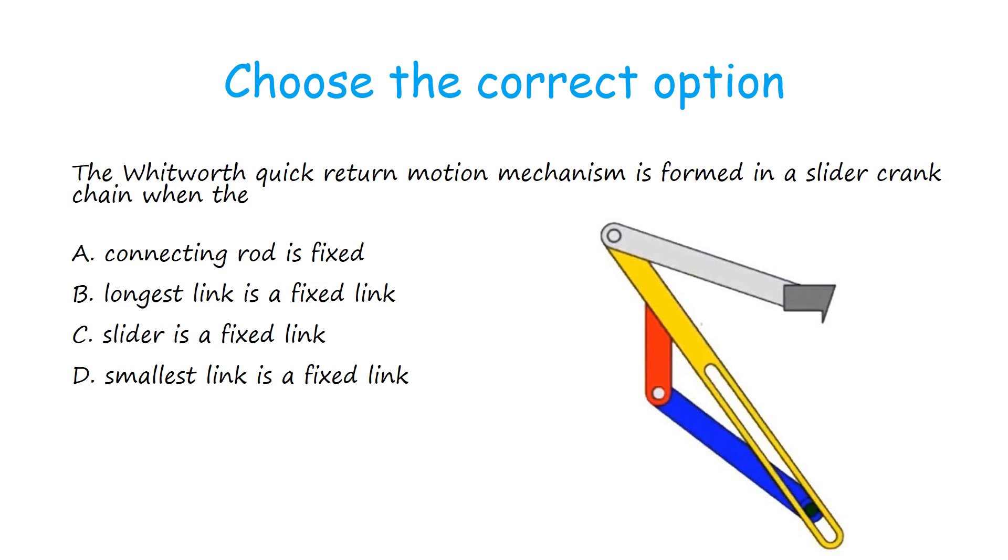Option A, connecting rod is fixed. Option B, longest link is a fixed link. Option C, slider is a fixed link. Option D, smallest link is a fixed link.